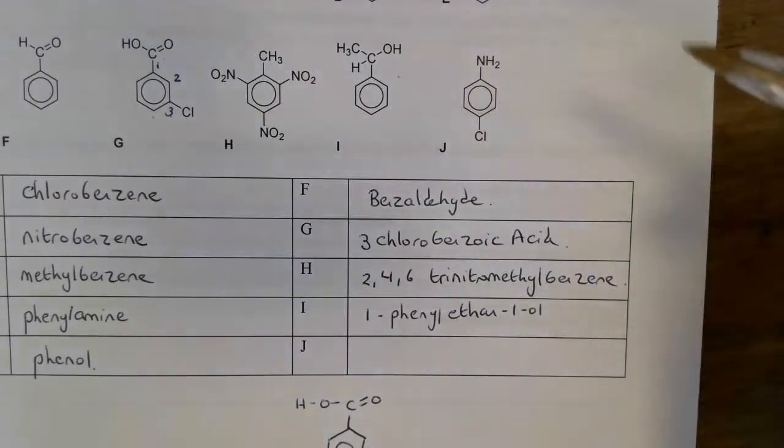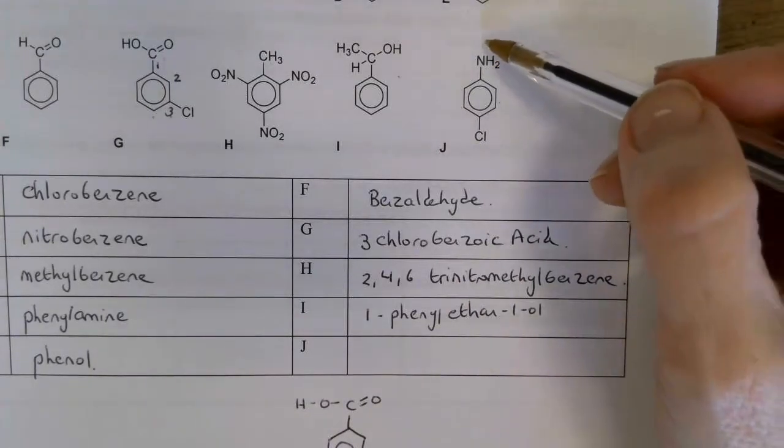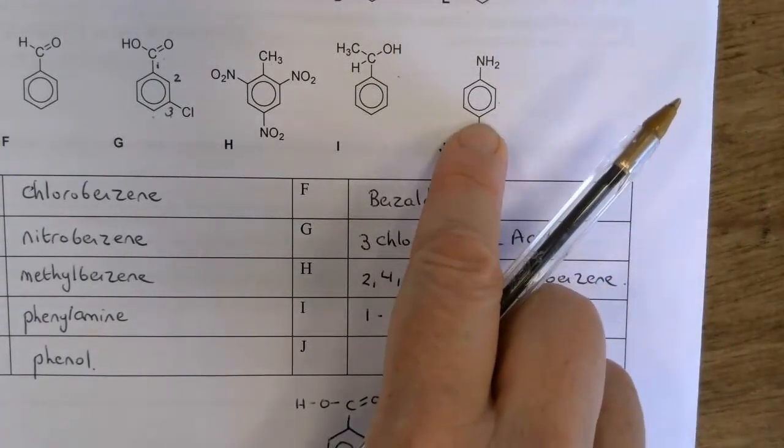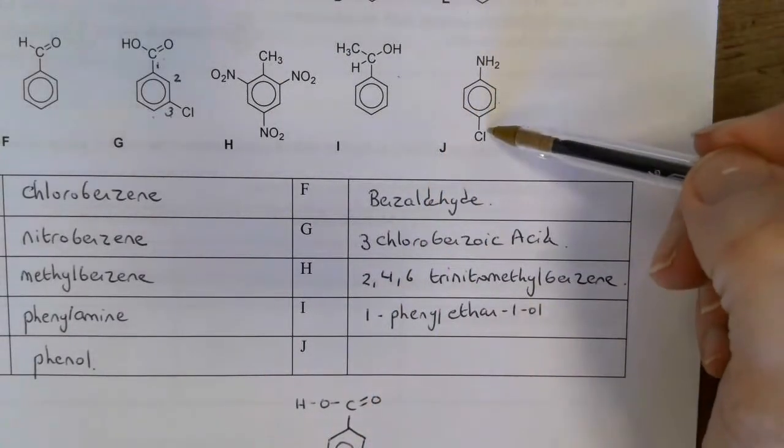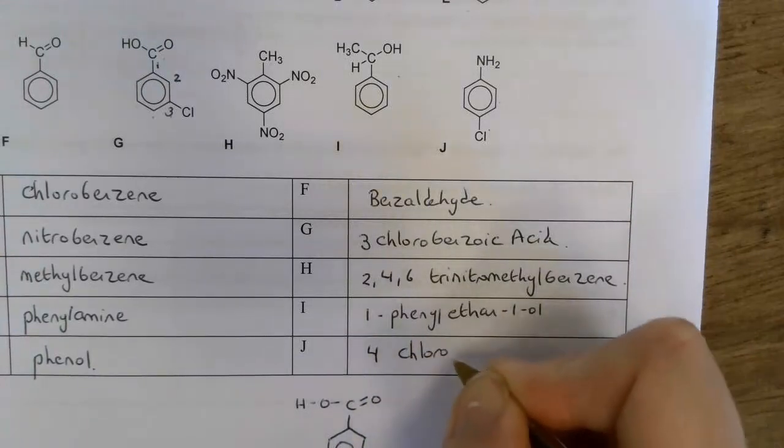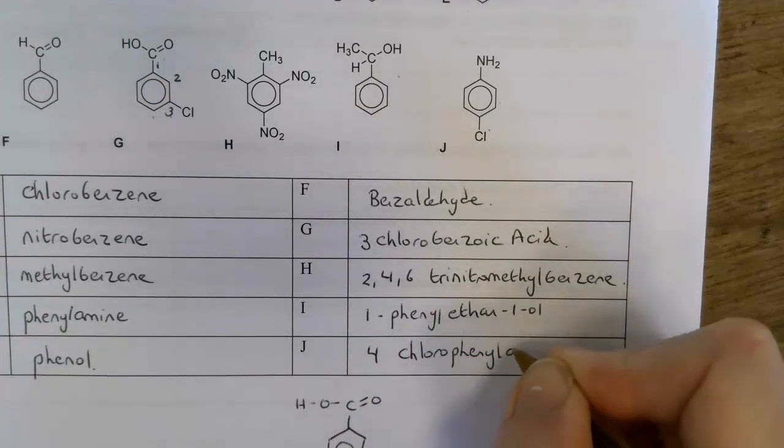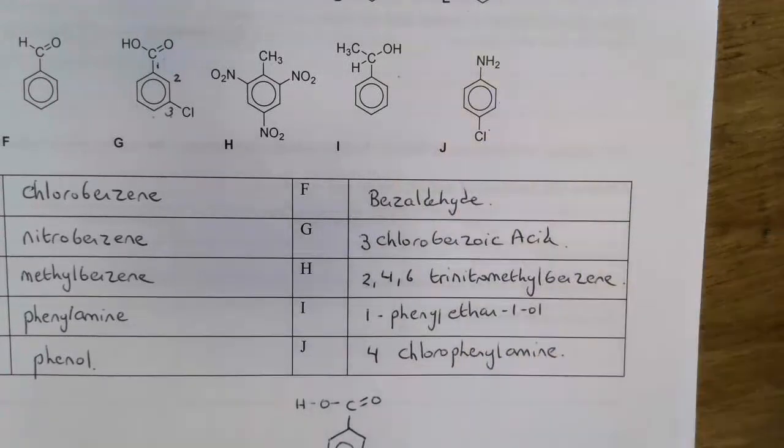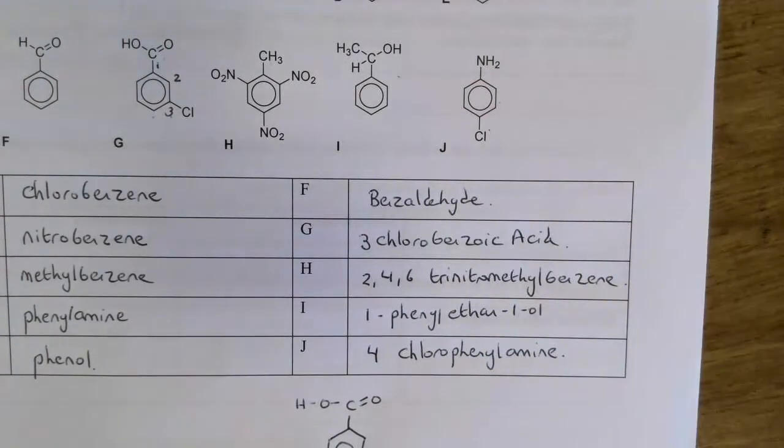J is a little bit more straightforward because the trick is to recognize that without the chlorine there, that is phenylamine. So with the chlorine there it just becomes 4-chlorophenylamine. And that is how we name aromatics. So that was looking at the basic structure of benzene and how to name benzene and phenol compounds. In the next videos we're going to be looking at the reactions of benzene and also the mechanisms for benzene.